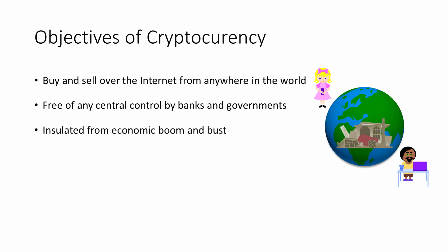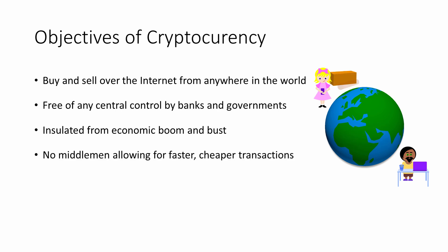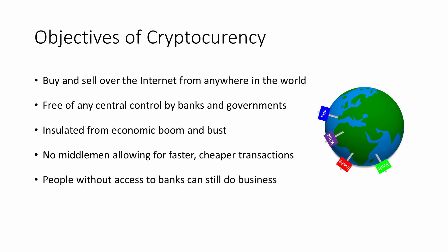As a result, Bitcoin would be insulated from boom and bust cycles in the economy, which, on many an occasion in the past, have caused banks and other financial institutions to fail catastrophically. The power of Bitcoin would be in the hands of the people who used it. Cutting out the middlemen and the bureaucracy would allow for much faster transactions at a greatly reduced cost. Bitcoin would also allow people without bank accounts, and indeed whole communities without banking systems, to do business, opening up new markets for everyone.